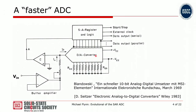Moving to the modern era, this is an example of a successive approximation ADC from the 1960s. This one comes from a book called Seitzer, originally in German, and the author Blandowski describes 'ein schneller ATD,' which means a faster ATD. This ATD is based on a current mode DAC — it outputs a current in a binary fashion — and that current gets compared with a buffered version of the input signal. The SAR operation is guided by this SAR register.